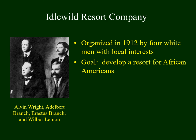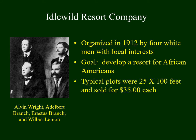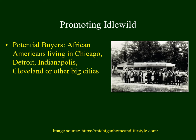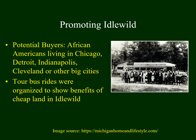These four entrepreneurs purchased property and divided it into very small plots so they could sell them at an affordable price. Typical plots were about 25 by 100 feet and sold for $35 each, payable over time with a little money down and monthly payments. Property in Idlewild was promoted to African Americans in big Midwestern cities such as Chicago, Detroit, Indianapolis, and Cleveland. They encouraged people to visit on free tour bus rides with no obligation, bringing people to show the benefits of purchasing inexpensive property in the beautiful area of Idlewild.